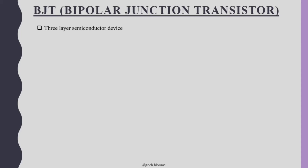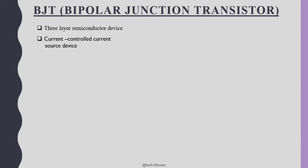BJT is a three terminal semiconductor device. With the name Bipolar Junction Transistor, the name bipolar itself tells that current conduction takes place due to two carriers — that is holes and electrons. It is also called a current controlled current source device because BJTs are basically used for current signal amplification and the working of the BJT is controlled by current.